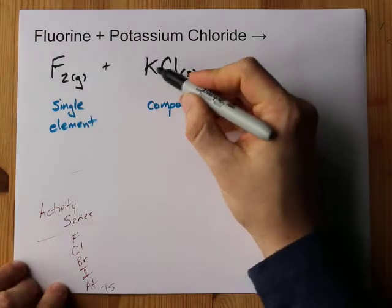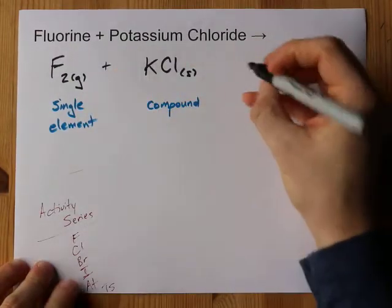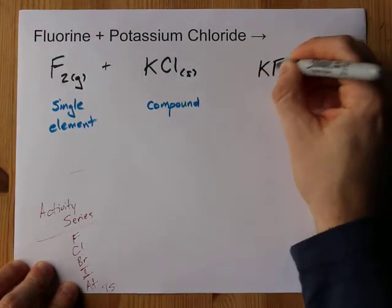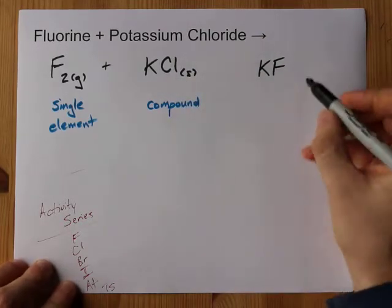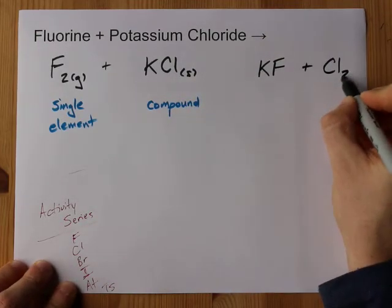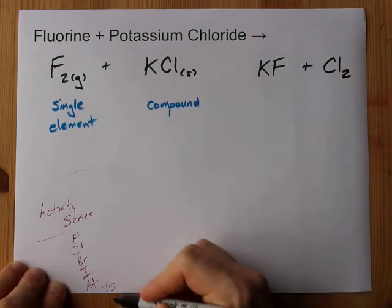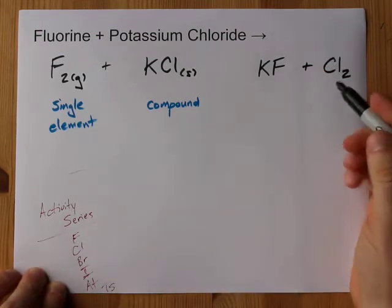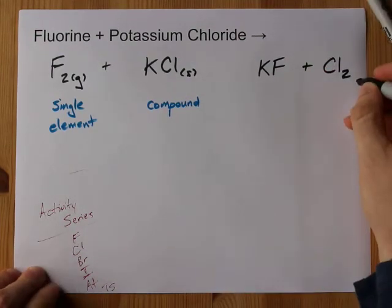So you're going to have potassium bonded with F, it's going to give you KF, and then the Cl will be on its own, that gives you Cl2. All of the halogens as pure elements have a subscript 2 as diatomic molecules.